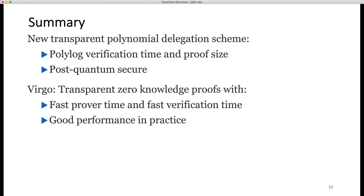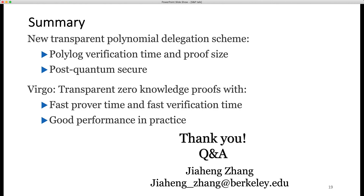In summary, in this work we first propose a transparent polynomial delegation scheme with O(log² n) verification time and proof size, and it is post-quantum secure. Then we apply it to Libra and get a new transparent zero-knowledge proof system, Virgo, with faster prover time and faster verification time. Virgo also has good performance in real experiments. Thank you — if you have any questions, just ask me.